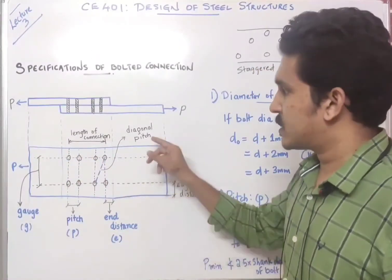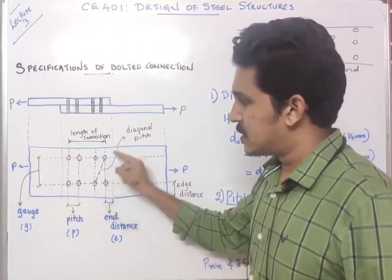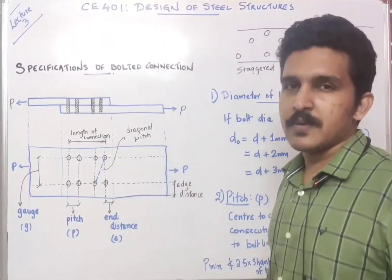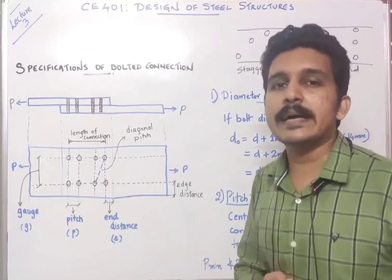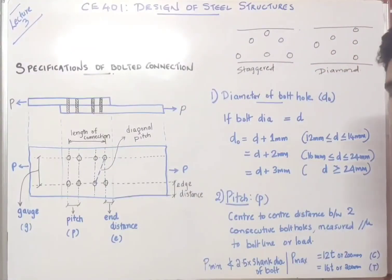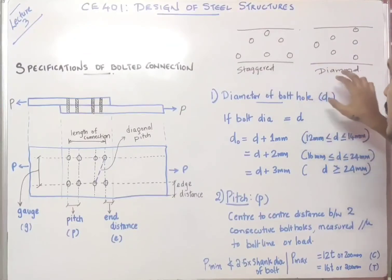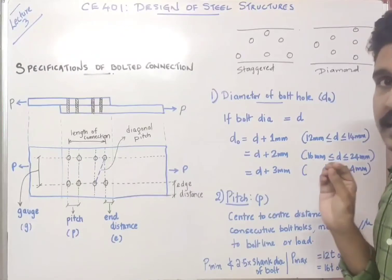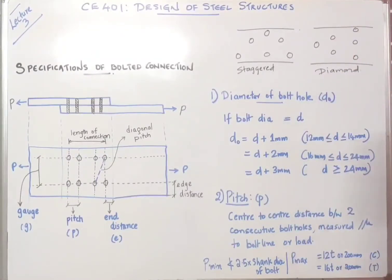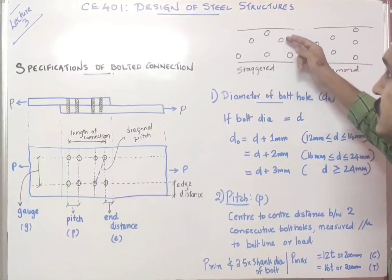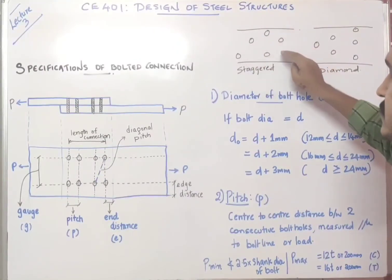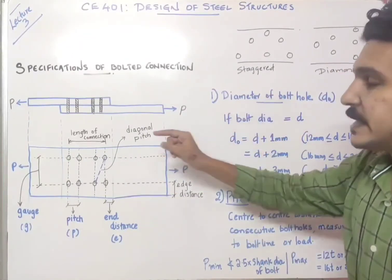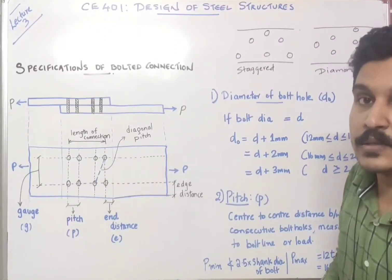There is one more term — diagonal pitch — which is the pitch distance measured in the diagonal direction between two bolts. We don't use diagonal pitch much except in a staggered connection. There are two types of bolt arrangements: staggered and diamond connection. The diamond connection is the most efficient type, and we will see why in another video. In a staggered connection, the bolts are arranged diagonally, and in that case we use diagonal pitch for design calculations.